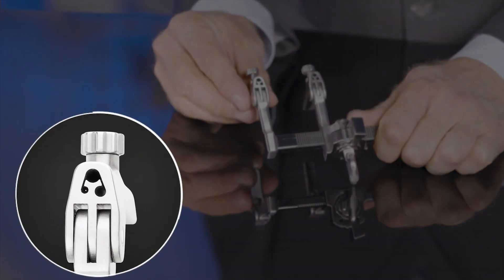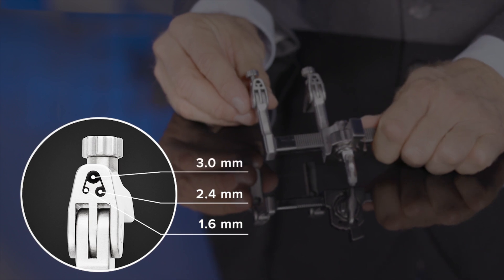There are three holes on the distractor that can be used to accommodate different size pins: a 1.6, a 2.4, and a 3.0.